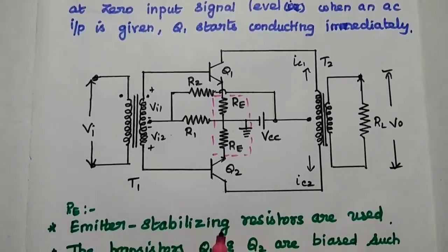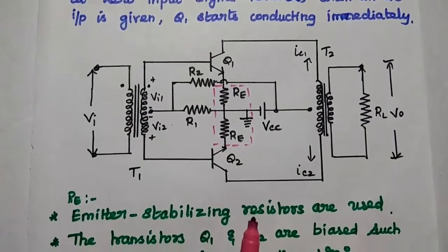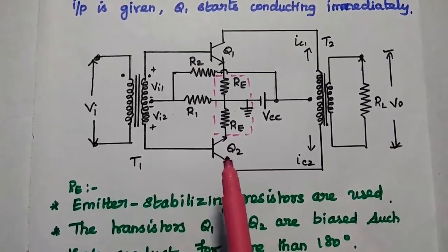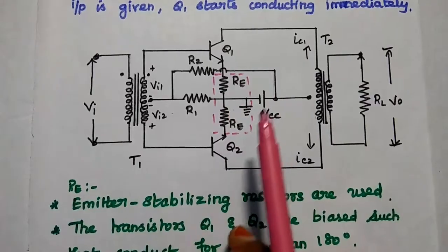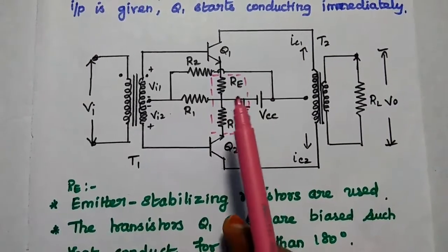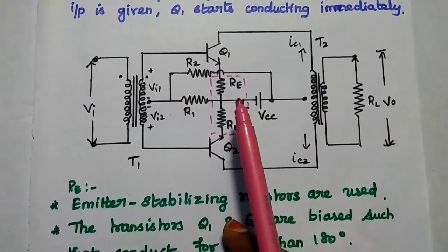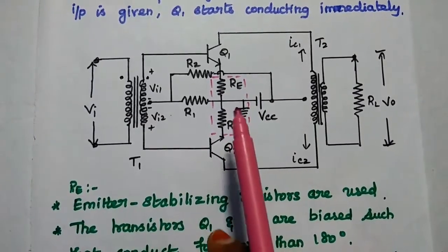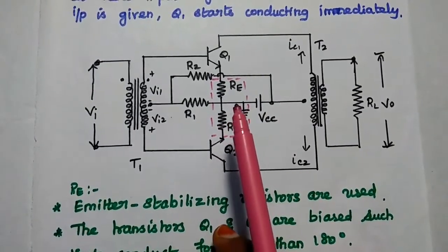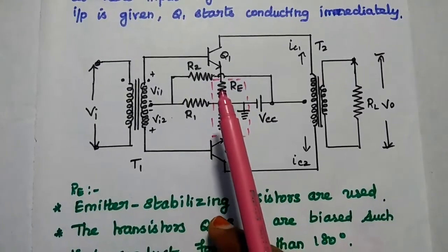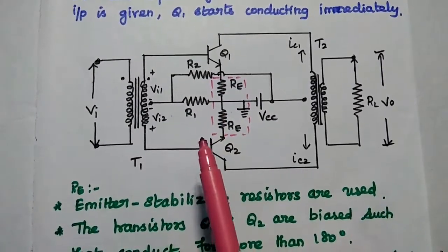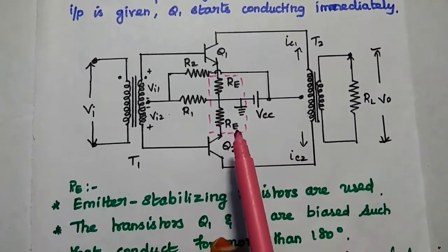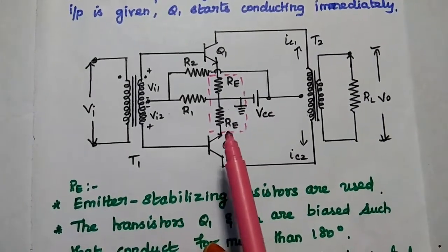This is the circuit diagram of Class AB amplifier. It is similar to Class B amplifier. There is an additional component in Class AB — the emitter stabilizing resistor. These emitter stabilizing resistors are mainly used to bias the transistors in such a way that they conduct for more than 180 degrees but less than 360 degrees.